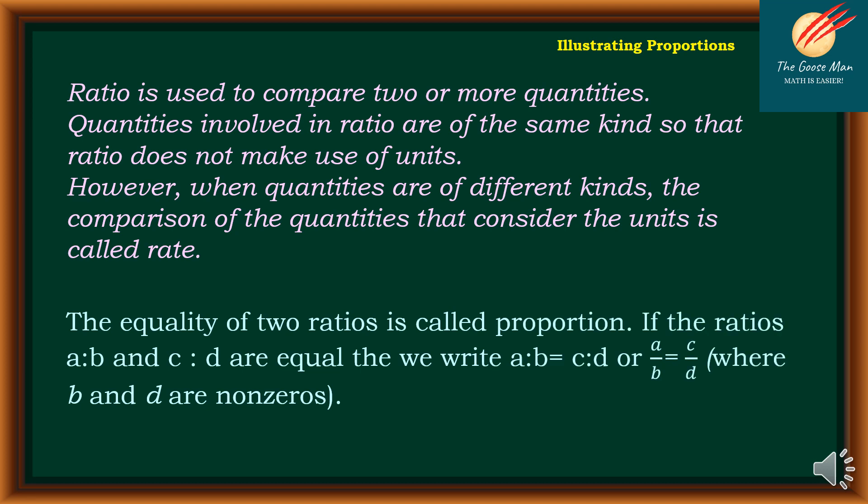Also, the equality of two ratios is called proportion. If the ratios A is to B and C is to D are equal, then we write A is to B is equal to C is to D, or A over B is equal to C over D, where B and D are non-zero.